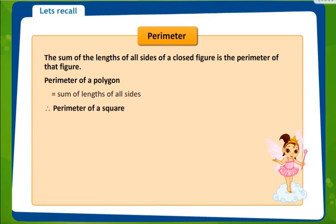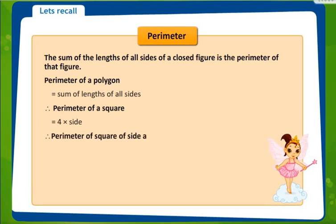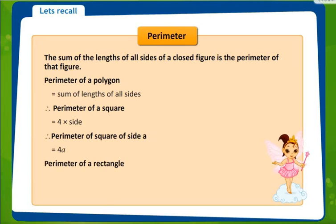Perimeter of a square. Now we all know a square has four sides, and for a square each side is equal — all four sides are the same. So it is 4 times the side. If the side of the square is a, then the perimeter of a square will be 4a.